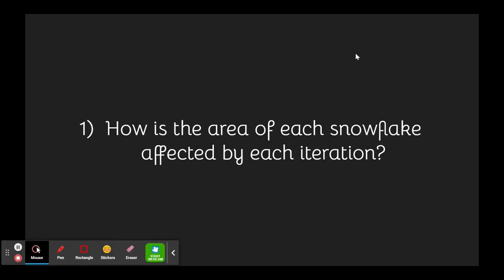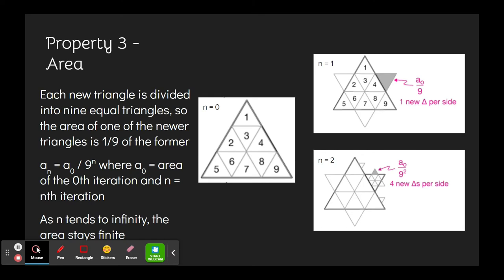And now for some FAQs. The first FAQ is how is the area of each snowflake affected by each iteration? The area of each newer triangle can be found through the equation a is equal to a over 9 to the n, where n is the nth iteration and a is the area of the original triangle.